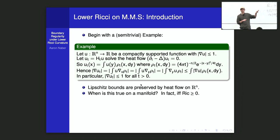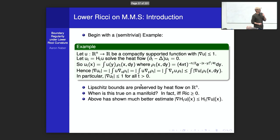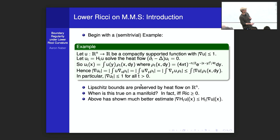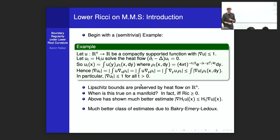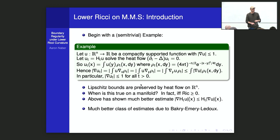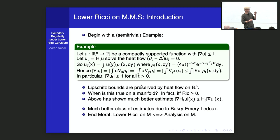There is a whole class of such estimates due to Bakry, Émery, and Ledoux, all equivalent to lower bounds on Ricci curvature — you can get other lower bounds besides zero by adding exponentials. The end moral is that you have a lower Ricci bound if and only if you have this kind of analytic control on M. As a side remark, there are also equivalences for two-sided Ricci bounds involving analysis on the path space of the manifold, replacing heat flows with martingales.